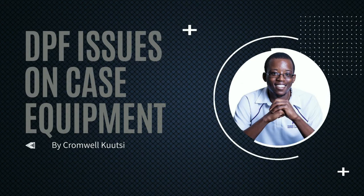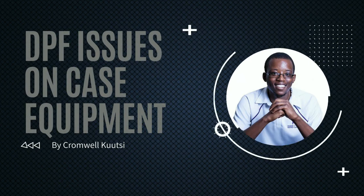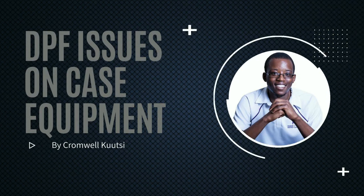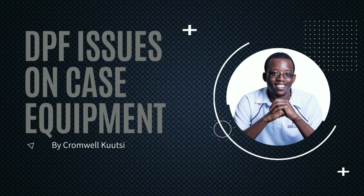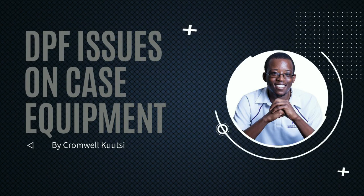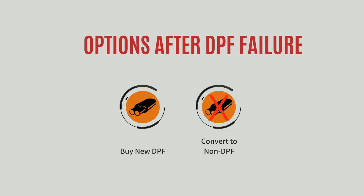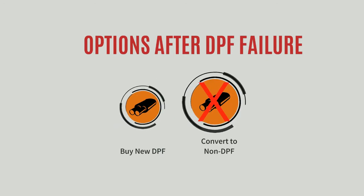After that, we'll have equipment operating without those emission systems. As explained, these systems tend to fail here in Africa due to horrible fuel quality. But I'd also say that regardless of where you are — in Africa or outside — the moment a piece of equipment gives you a DPF problem, the likelihood of it giving you the same DPF problems in the future is pretty high.